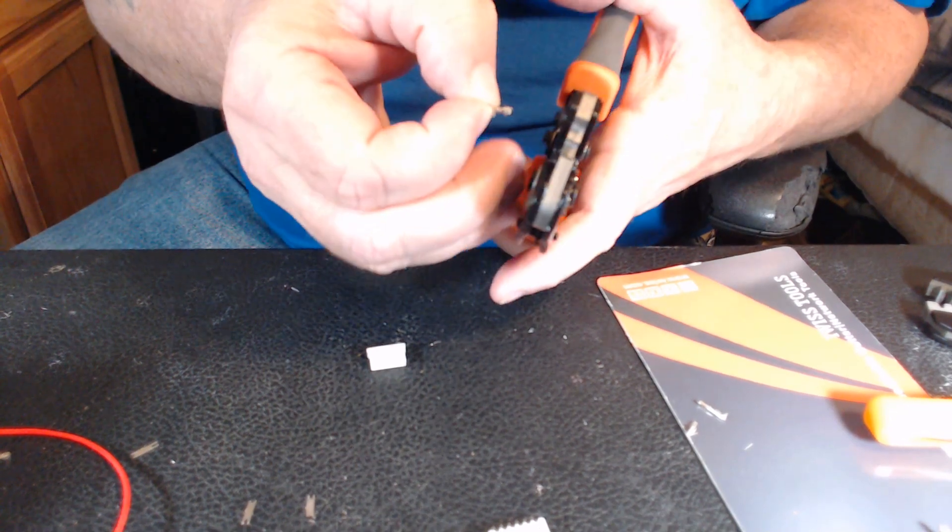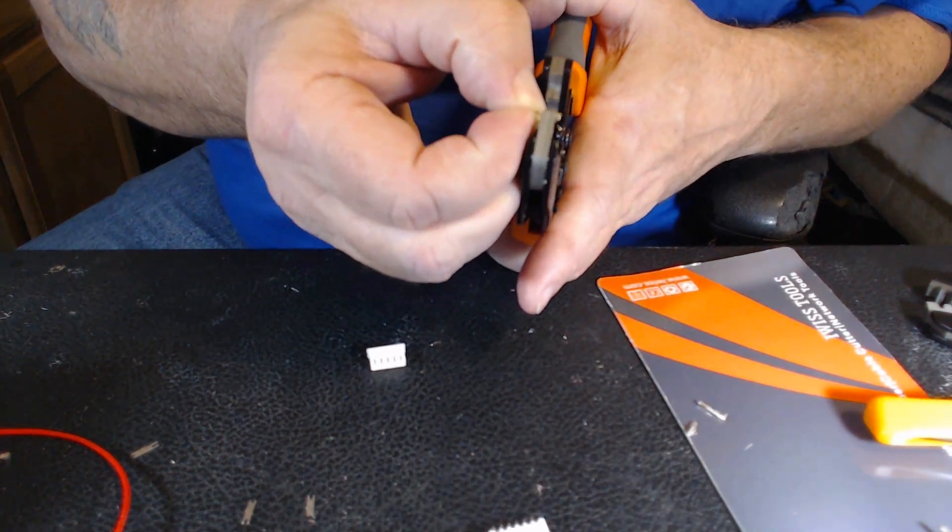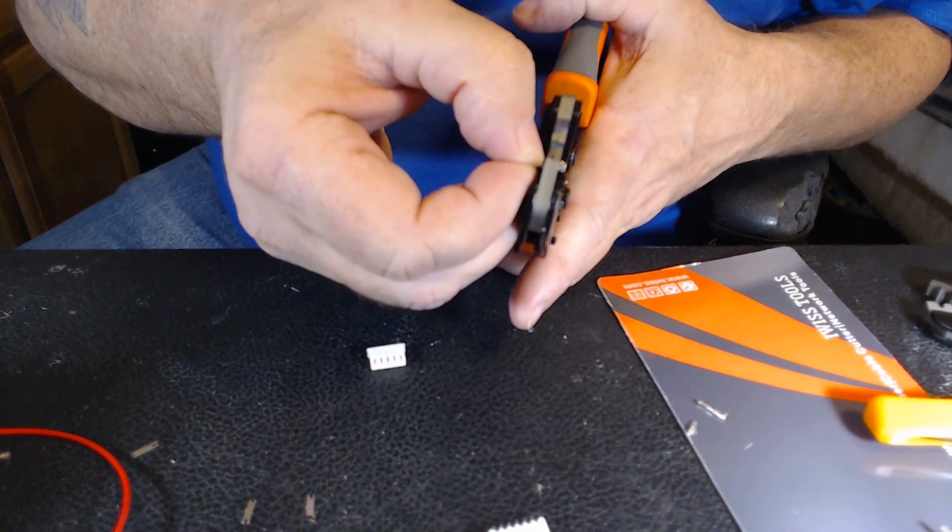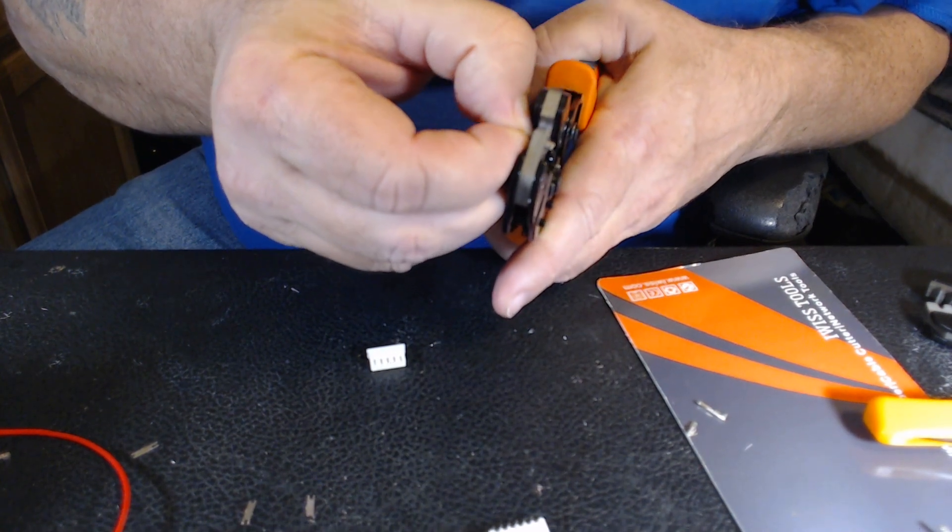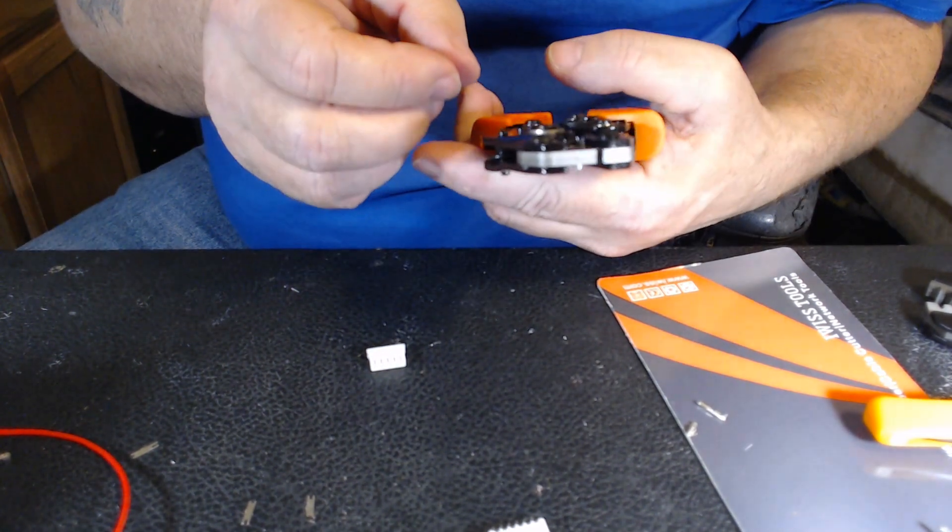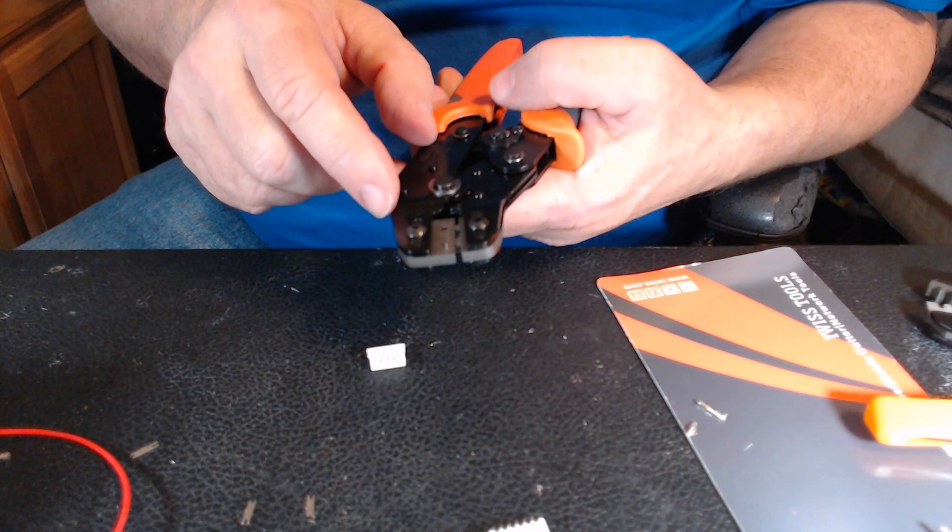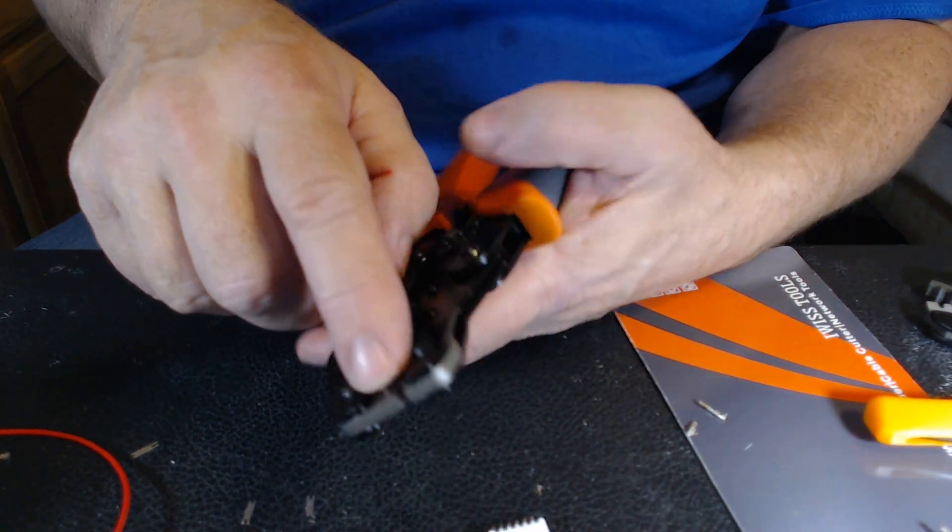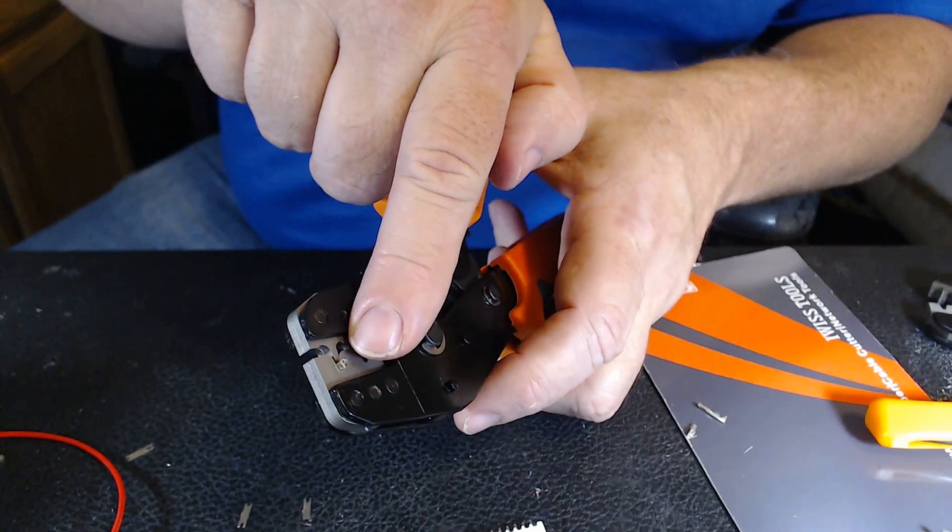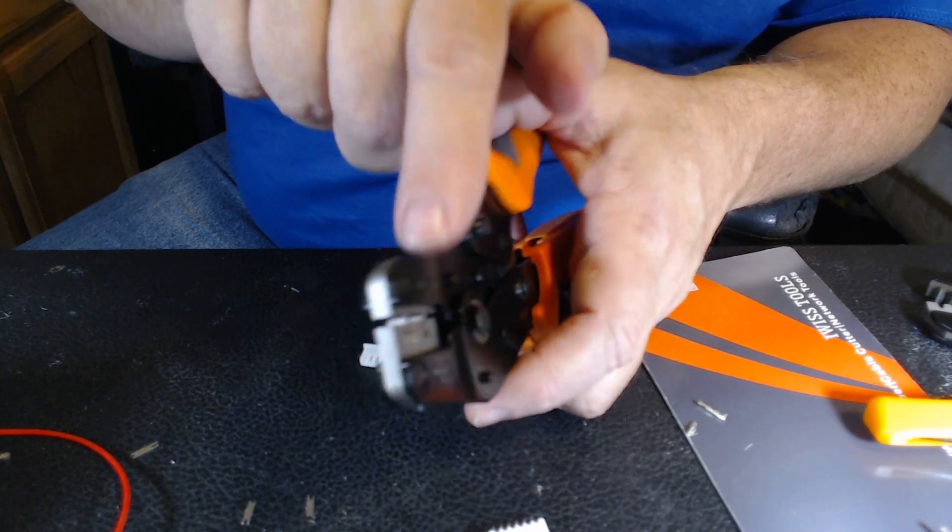And you take it in, set it in your crimper. And you just squeeze it down until it holds it. Don't squeeze it all the way. You'll see it's in there. And on the other side it sticks out just a little bit.